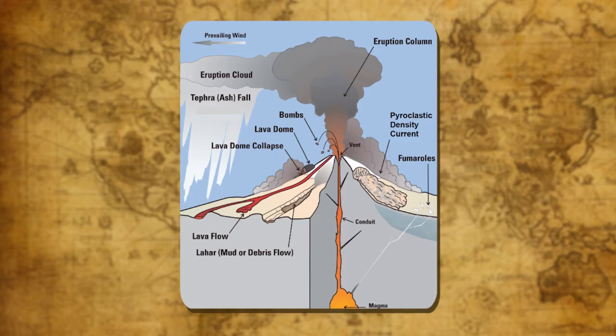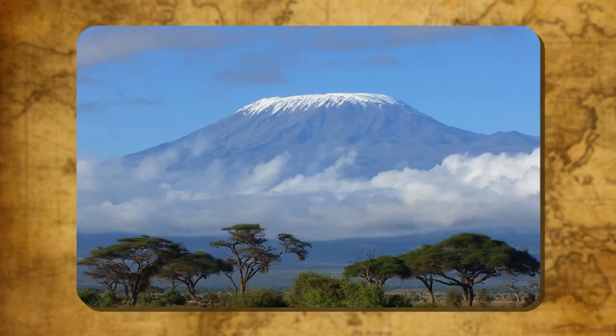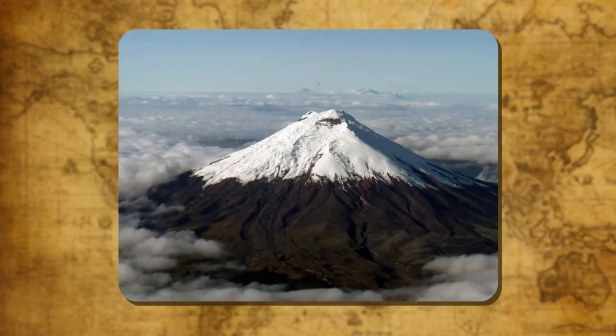Volcanic Mountains are the result of accumulation of volcanic material ejected from the interior of the earth. When a volcano erupts, hot magma is thrown out with great force. This magma accumulates around the vent of the volcano and forms a tall, cone-shaped mountain known as a volcanic mountain. Kilimanjaro in Africa, Fujiyama in Japan, and Cotopaxi in South America are examples of volcanic mountains.